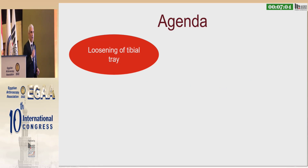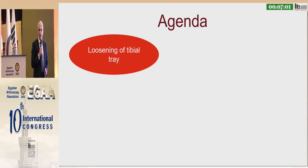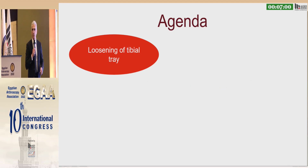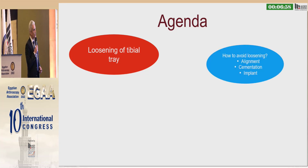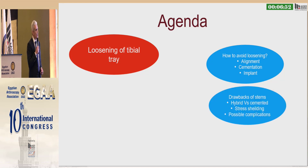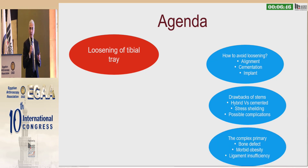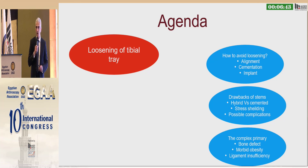What we're talking about overall is loosening of the tibial tray — this is the whole debate. When we talk about loosening of the tibial tray, we should look at alignment, cementation, and implant. We'll be looking at drawbacks of using a stem and finally the correct indication for using the stem, which is the complex primary knee.